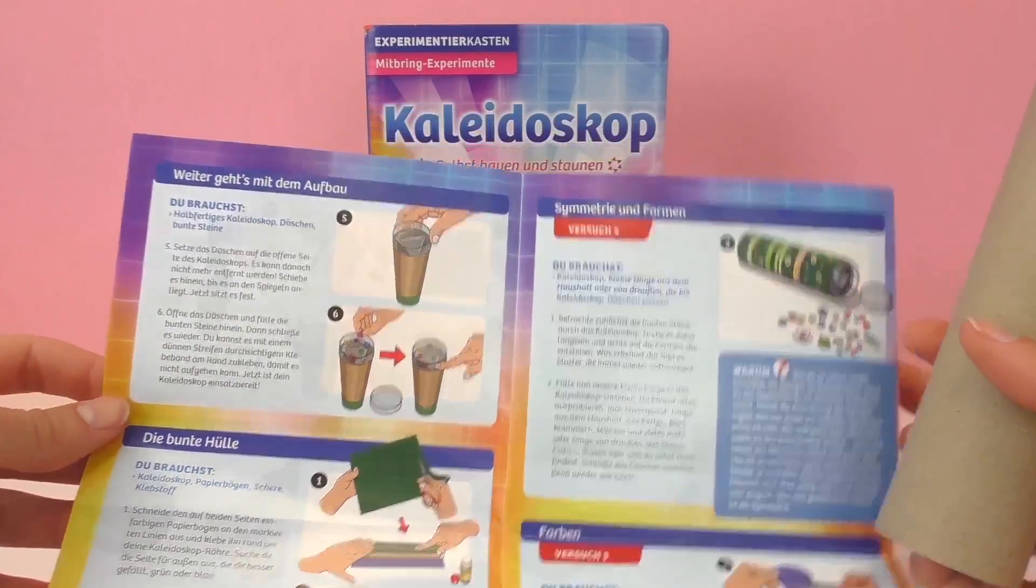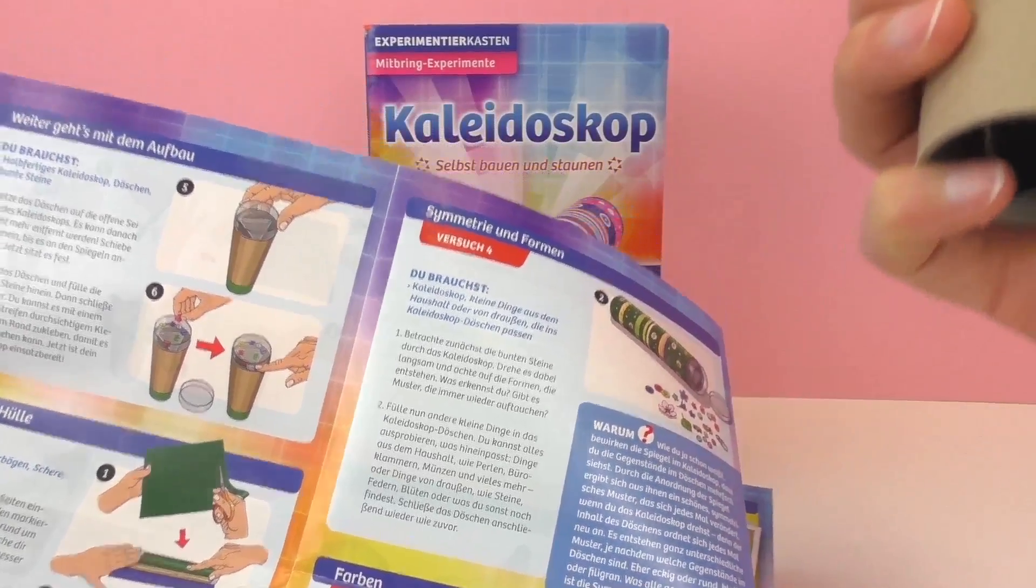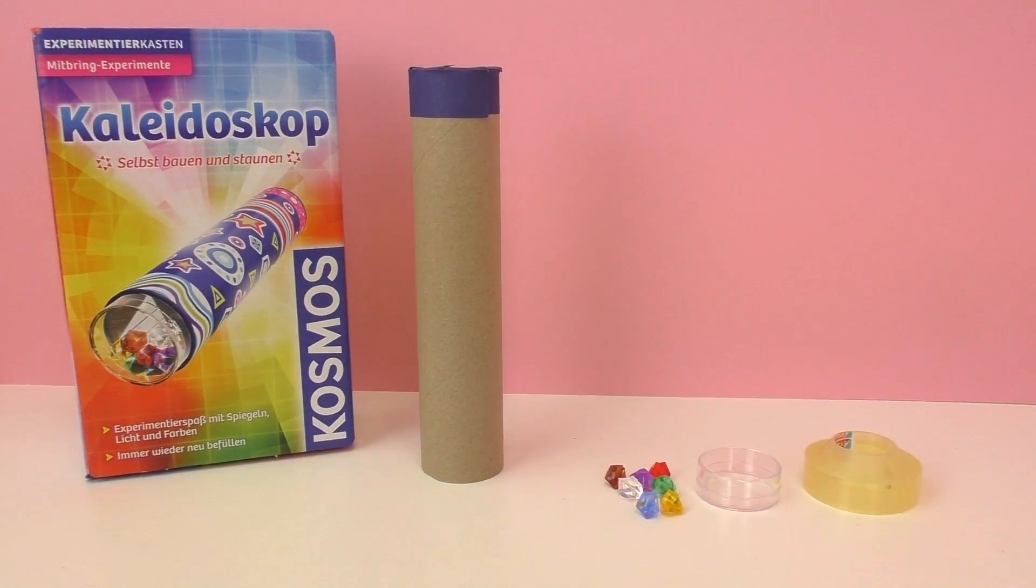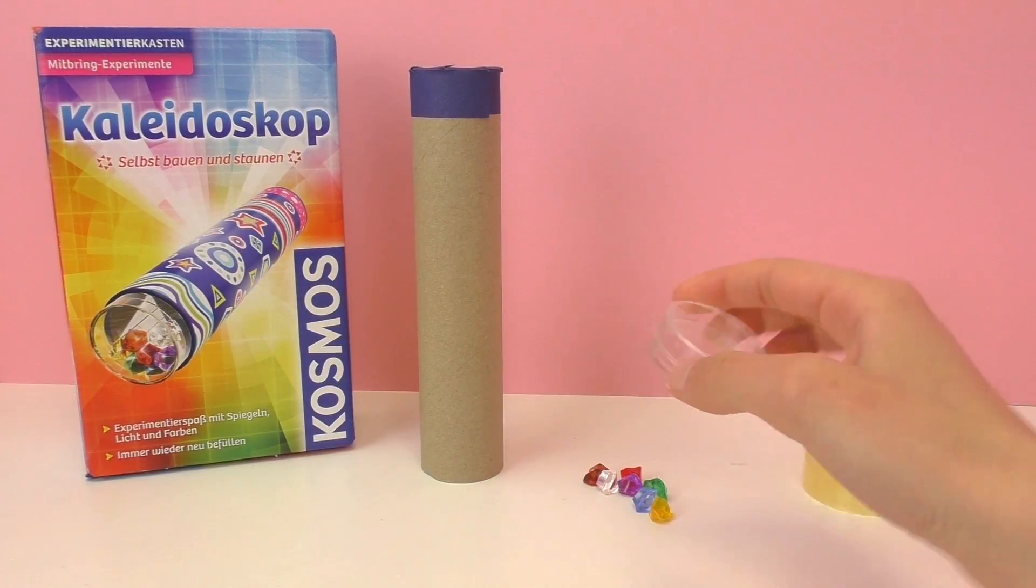So first off we have our half-finished kaleidoscope and we will be needing this for the experiment and we are also going to need some other things. Our half-finished kaleidoscope, colored rocks, our plastic case, and then also some clear tape.